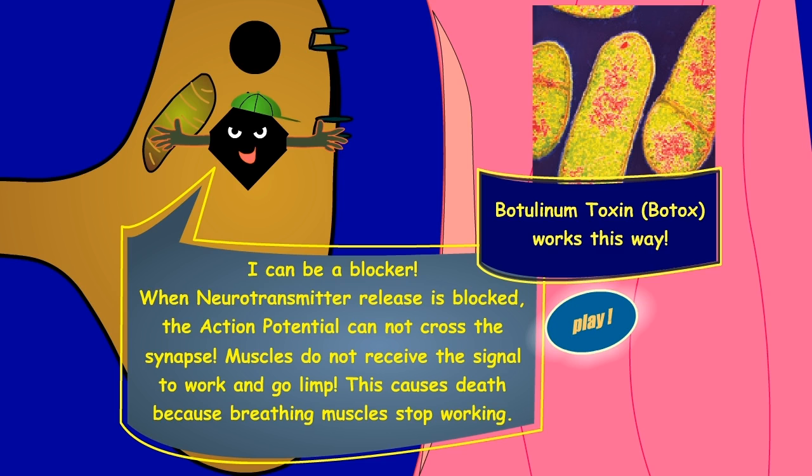I can be a blocker. When neurotransmitter release is blocked, the action potential cannot cross the synapse. Muscles do not receive the signal to work and go limp. This causes death because breathing muscles stop working.